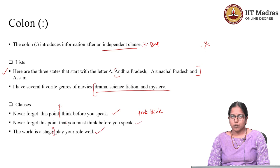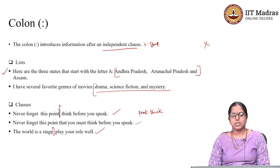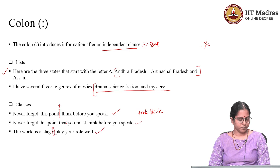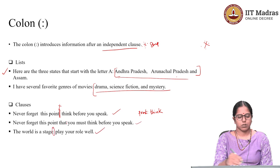Let us look at the uses of colons. You use it to introduce information in the form of lists. For example: 'Here are the three states that start with the letter A: Andhra Pradesh, Arunachal Pradesh, and Assam.' Another example: 'I have several favorite genres of movies: drama, science fiction, and mystery.' So we are introducing a list here, and therefore we use a colon to introduce this list.